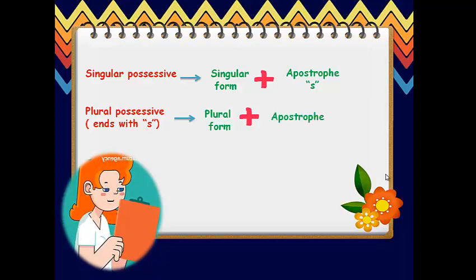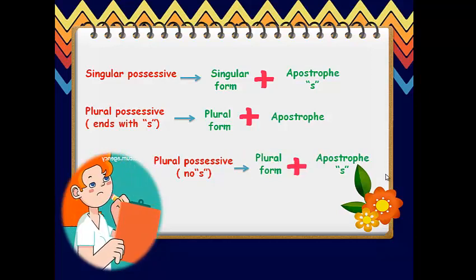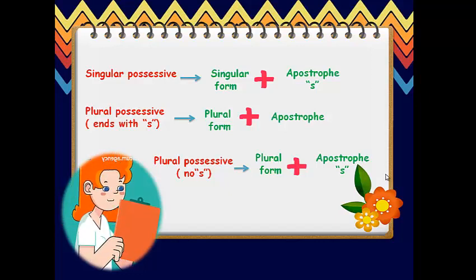But, if you want to make a plural possessive noun and the plural form of that noun doesn't end with S, you will write the plural form and add apostrophe S. And remember, no matter what type of possessive noun you are using, the possessive noun and the thing that noun possesses must be right next to each other in the sentence.